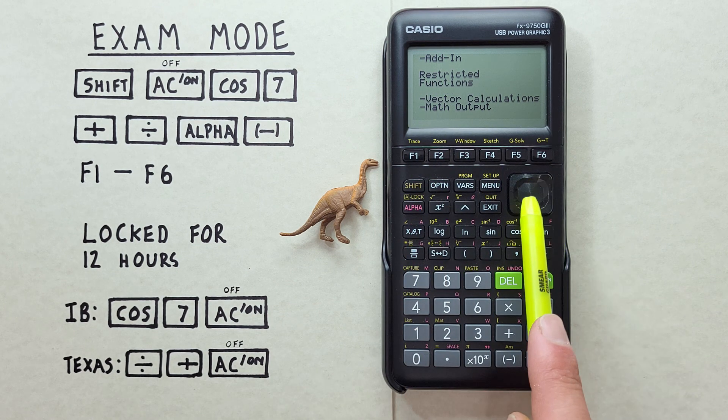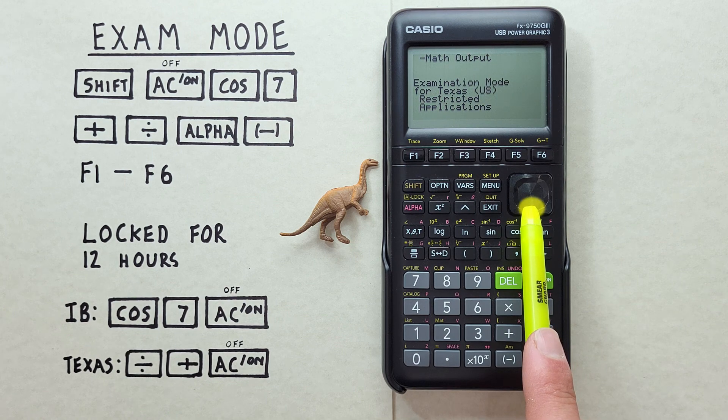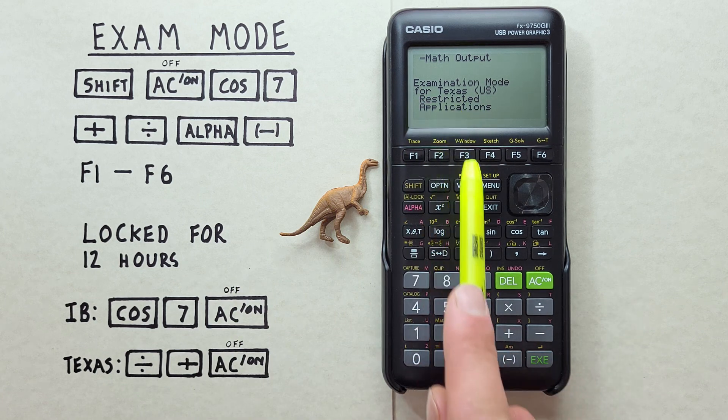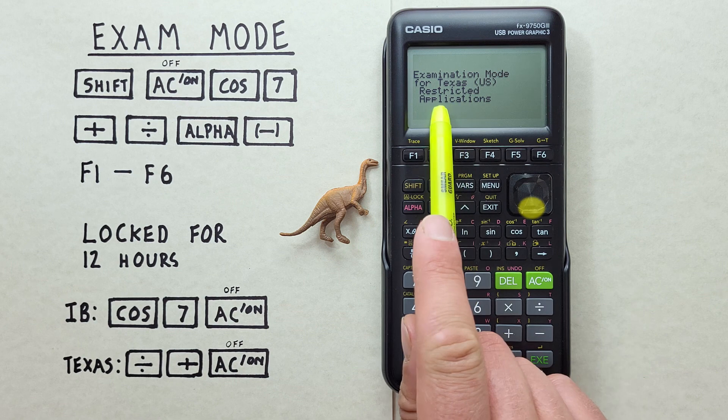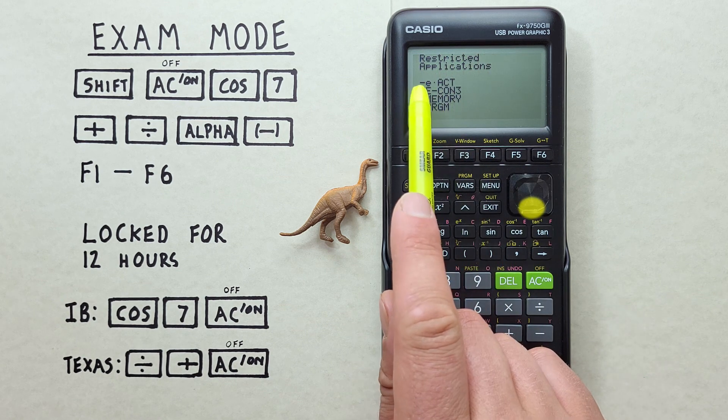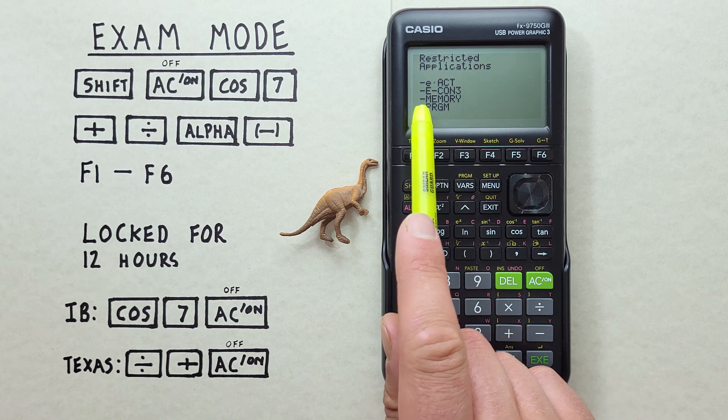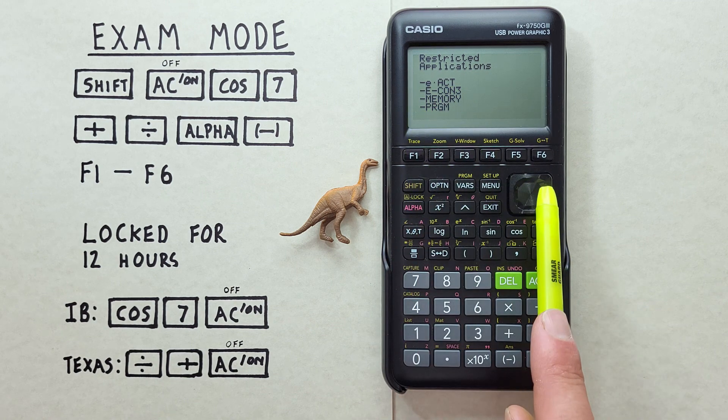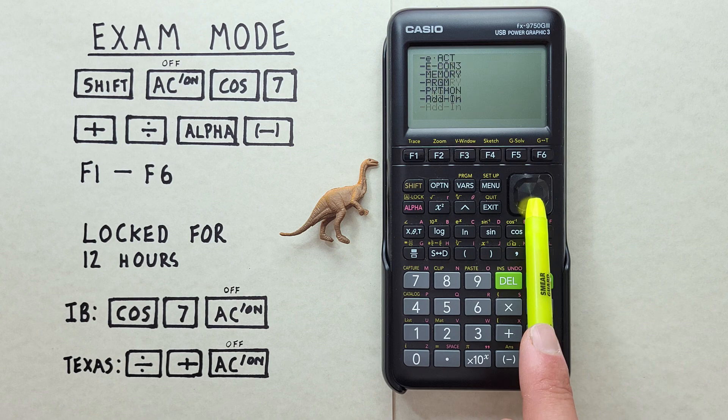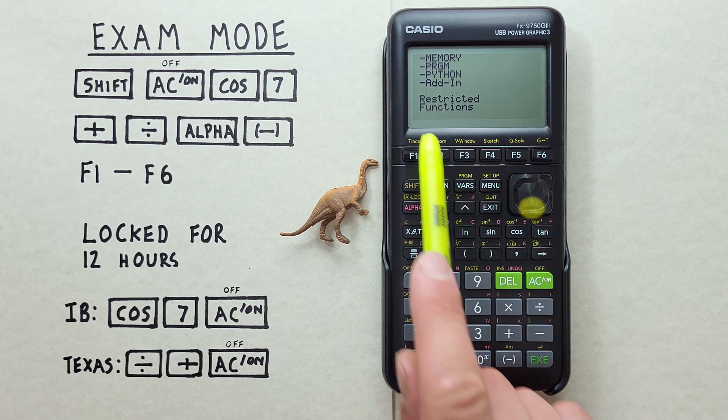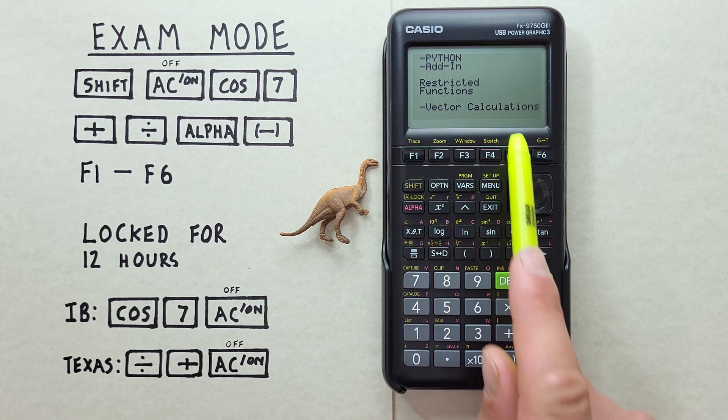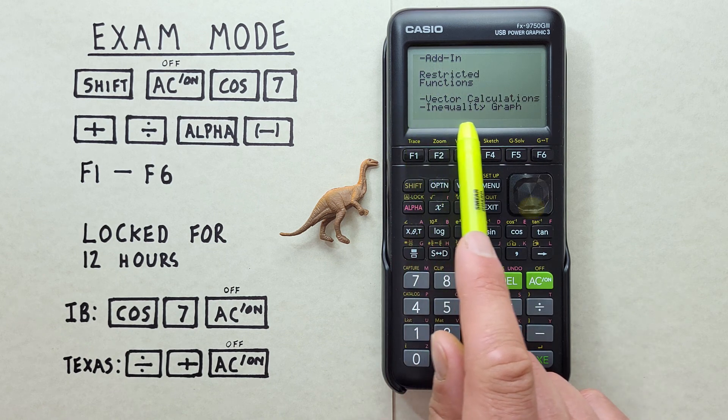If we continue to scroll down, we see the other Exam Mode, Texas Mode. And we scroll down to see the Restricted Applications for this. And we see it's the same as before. It's EACT, ECON3, Memory, Program, Python, and Add-In Apps, as well as the Restricted Functions, Vector Calculations. And, this is the different one, the Inequality Graph.